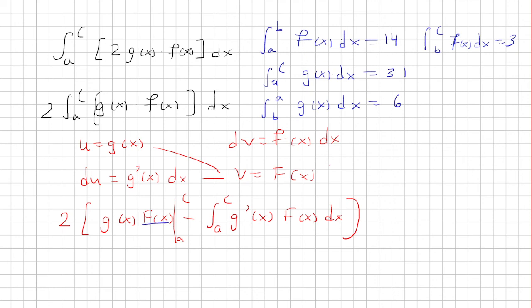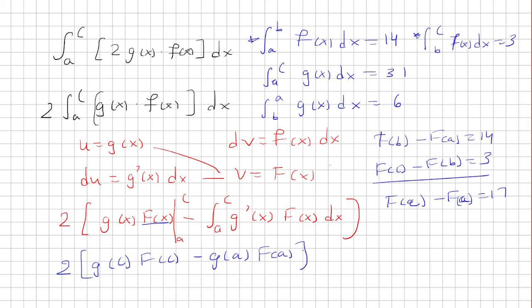You know, the only thing I can say, using these values, is that f of b minus f of a is 14. The second one is f of c minus f of b is 3. You can add these and get that f of c minus f of a is 17. But here, if you were to plug it in, you have g of c times f of c minus g of a times f of a. And it's pretty obvious that you can't solve this. So, this one, based off what we're given, has no solution.